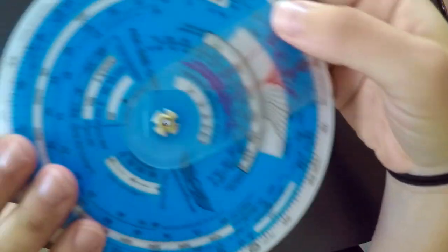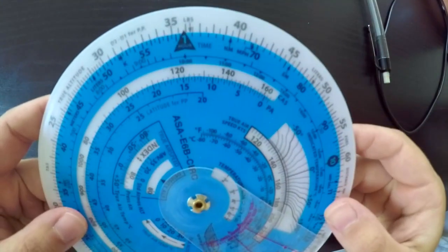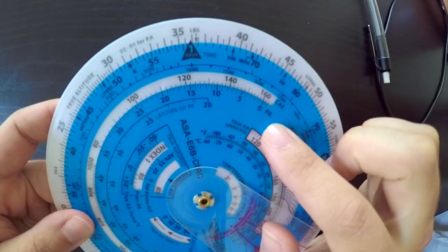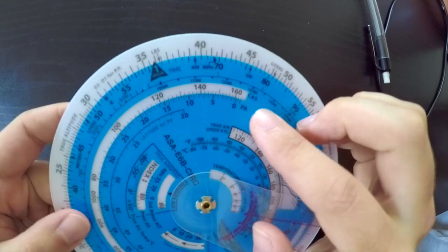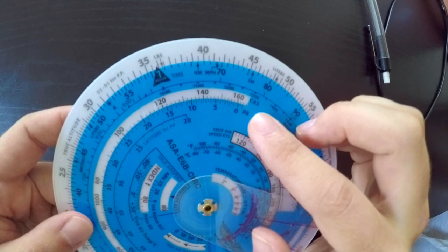So for this, you flip to the other side of your flight computer, and you'll see that right here, it says PA, which stands for pressure altitude, and CAS, which stands for calibrated airspeed or indicated airspeed. Same thing.